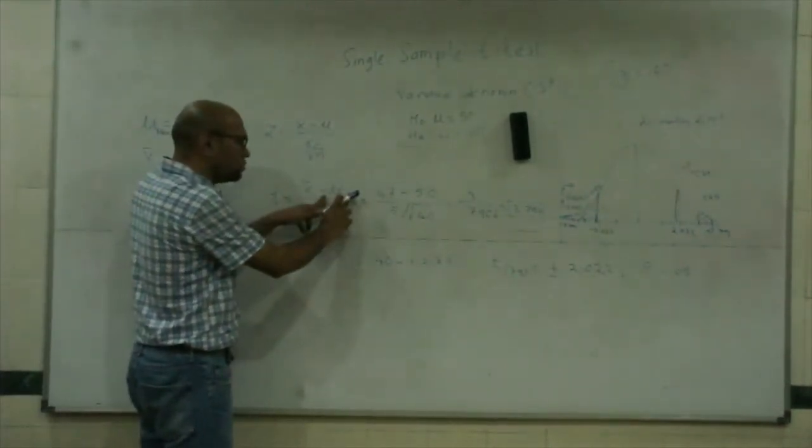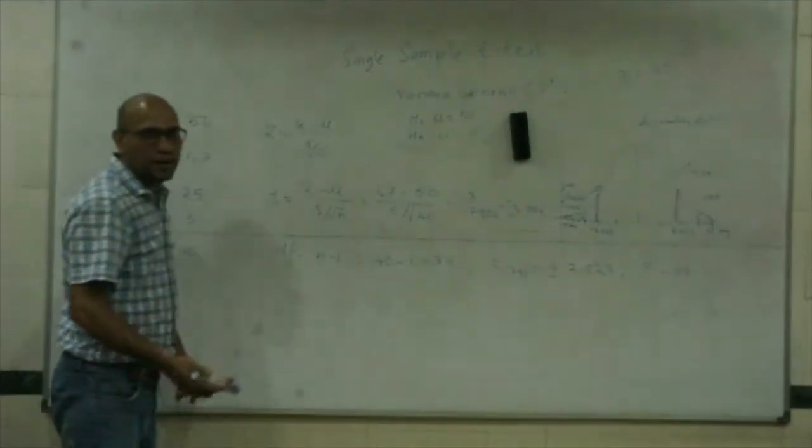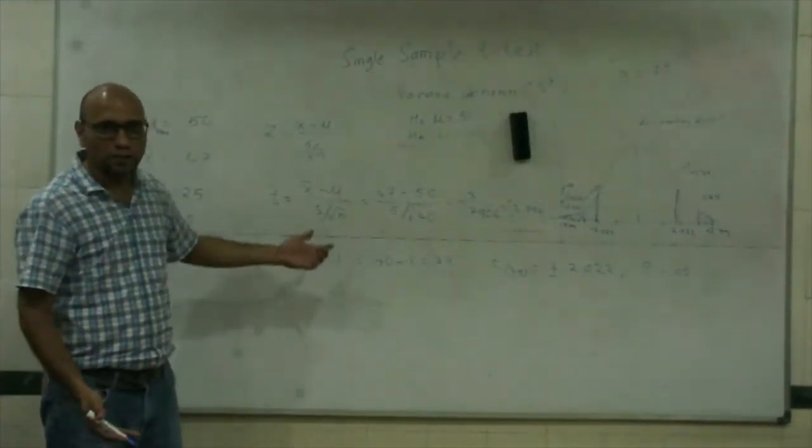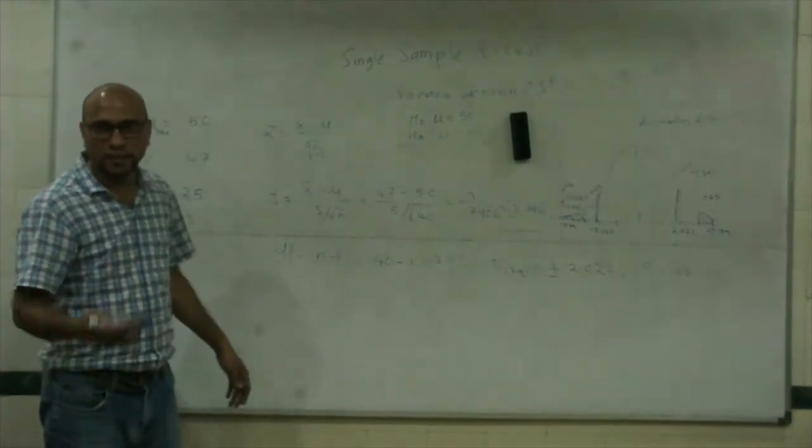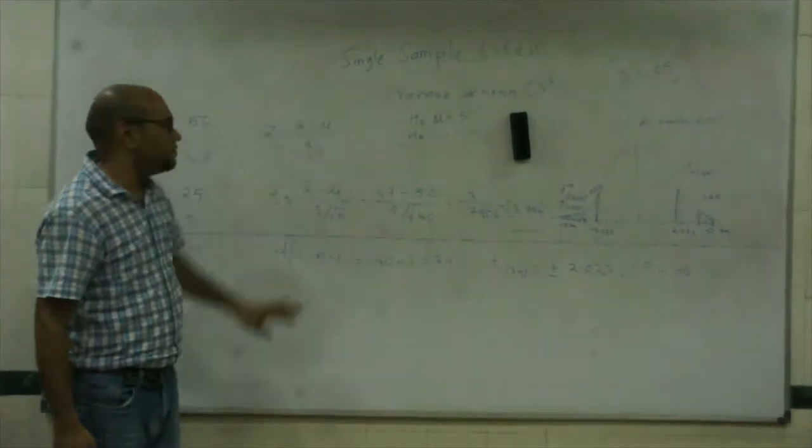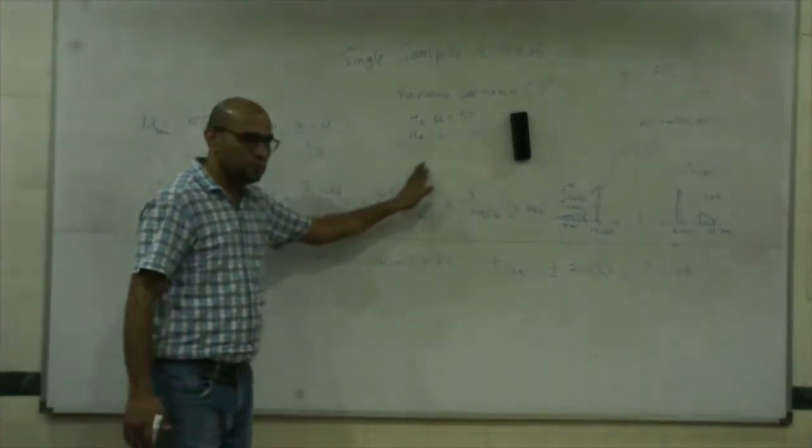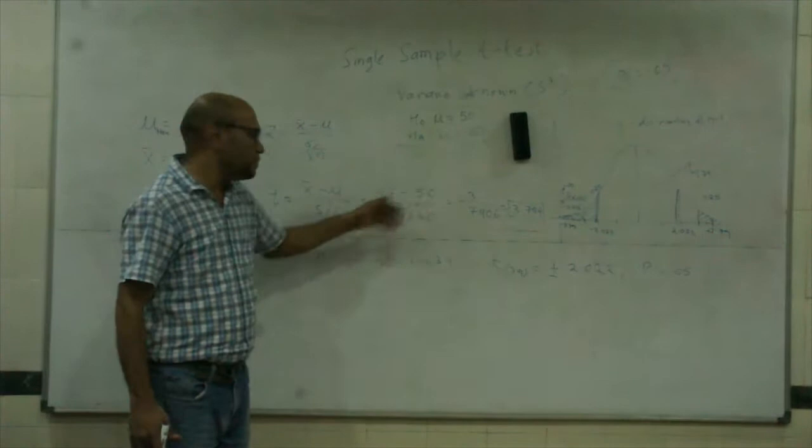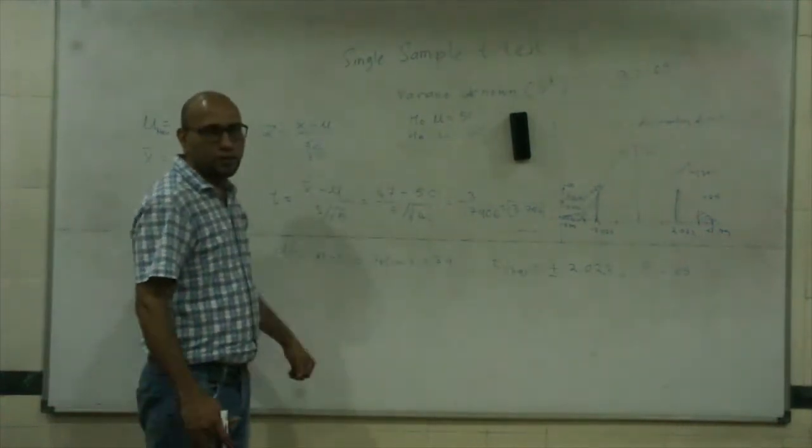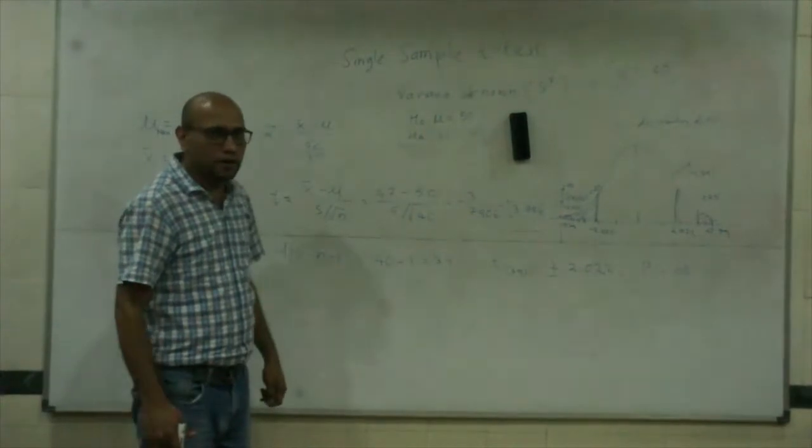If x̄ is smaller than μ, perhaps in reality I need not do the statistical test because it is smaller than μ. I know for sure that the t value would be negative and I would retain the null. If x̄ is larger than μ, then and only then would I do a t-test and test whether it is significant.